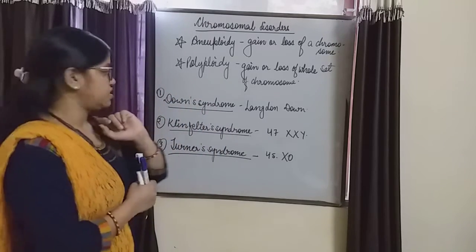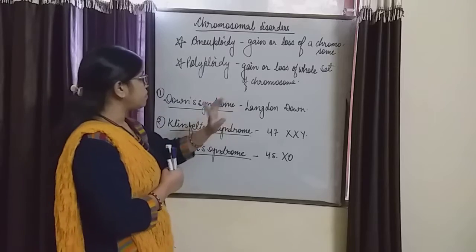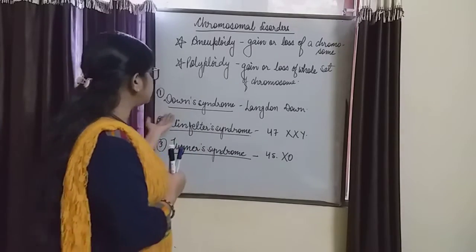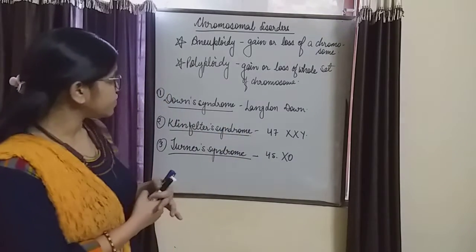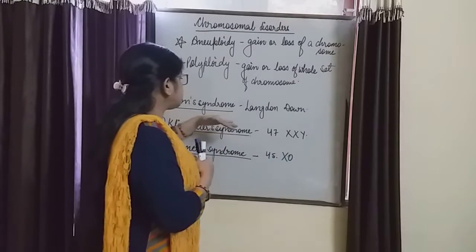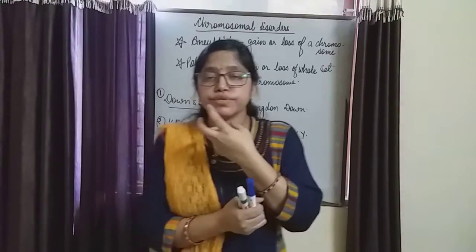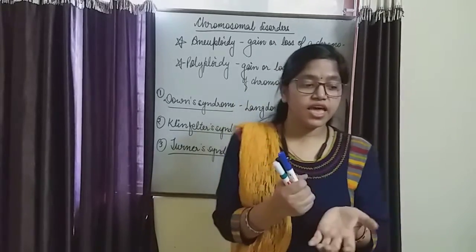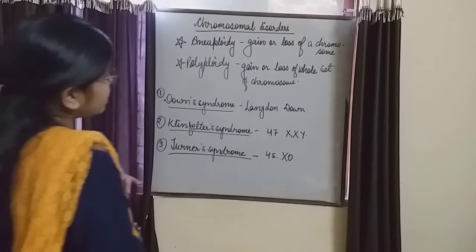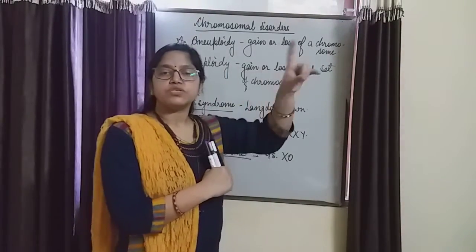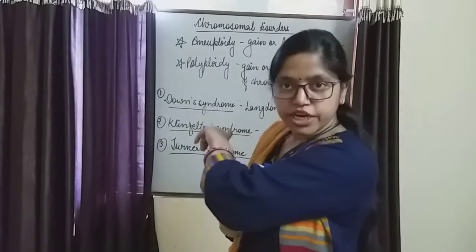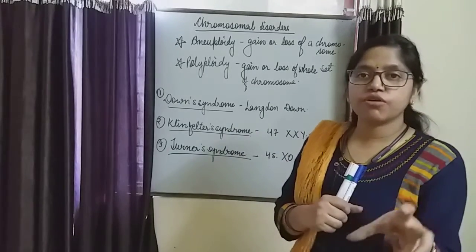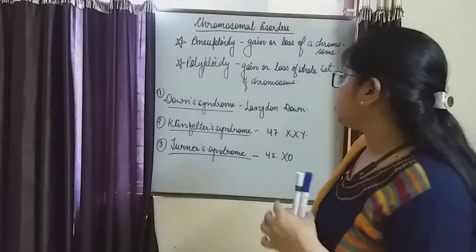There are three syndromes: Down syndrome, Klinefelter syndrome, and Turner syndrome. Down syndrome was proposed by the scientist Langdon Down, and therefore on his name the disease is said to be Down syndrome. Down syndrome takes place due to trisomy of chromosome 21.